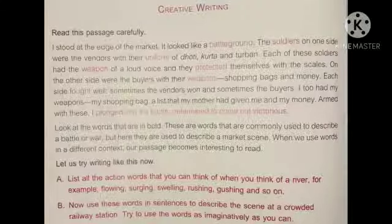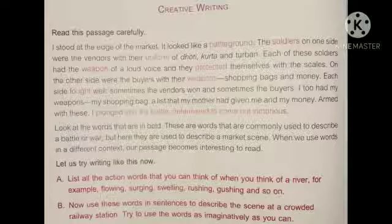Now let us move on to creative writing. Read this passage carefully. 'I stood at the edge of the market. It looked like a battleground. The soldiers on one side were the vendors with the uniform of dhoti, kurta and turban. Each of these soldiers had the weapon of a loud voice and they protected themselves with the scales. On the other side were the buyers with their weapons - shopping bags and money. Each side fought well. Sometimes the vendors won and sometimes the buyers. I too had my weapons - my shopping bag, a list that my mother had given me and my money. Armed with these, I plunged into the battle, determined to come out victorious.'